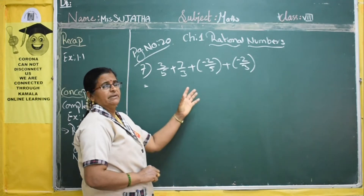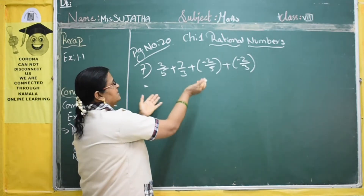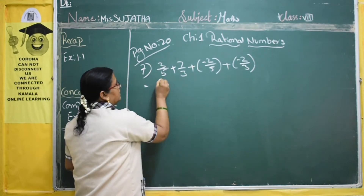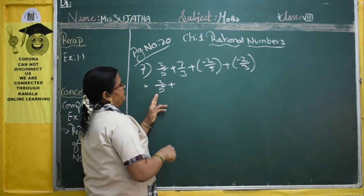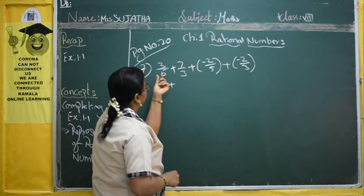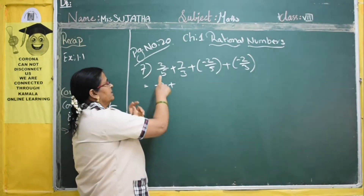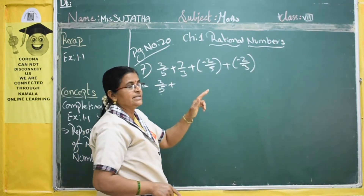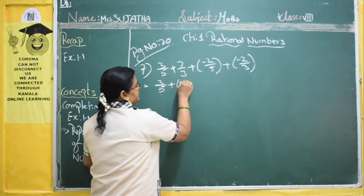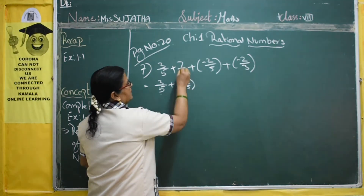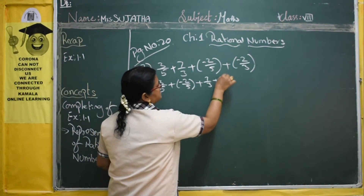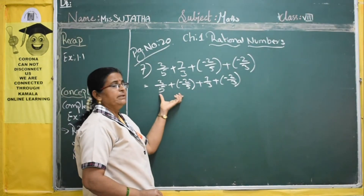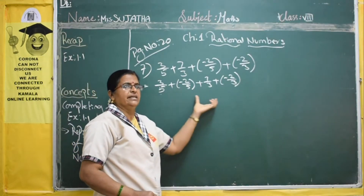Rearrangement means you have to change the order of the fractions — first place certain fractions, second like that. How I am arranging: 3/5 — now I look for the same denominator. 5 is the denominator here, so which fraction also has 5 as the denominator? This one: minus 2/5. Then plus 7/3 plus minus 2/3. Understood? Same denominators of the fractions are arranged together.